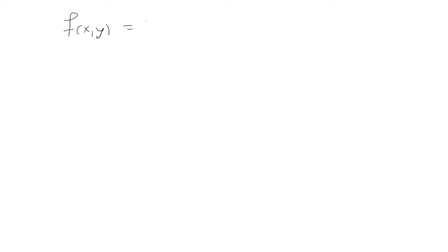Use the second derivative test to identify any critical points and determine what each critical point is. The function is f(x, y) = 7x²y + 9xy². First, to find the critical points, we need to take the partial derivatives with respect to x and y.